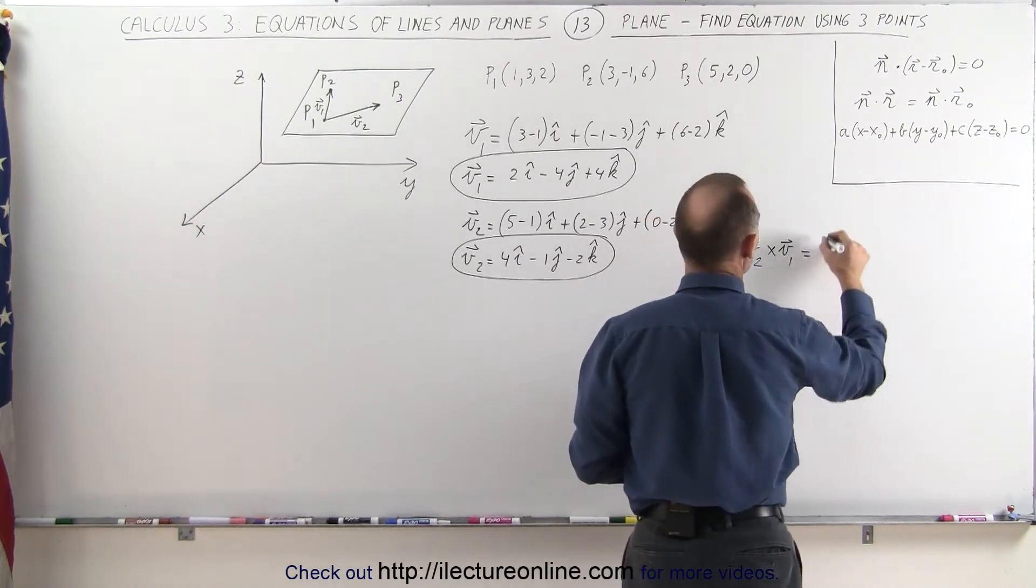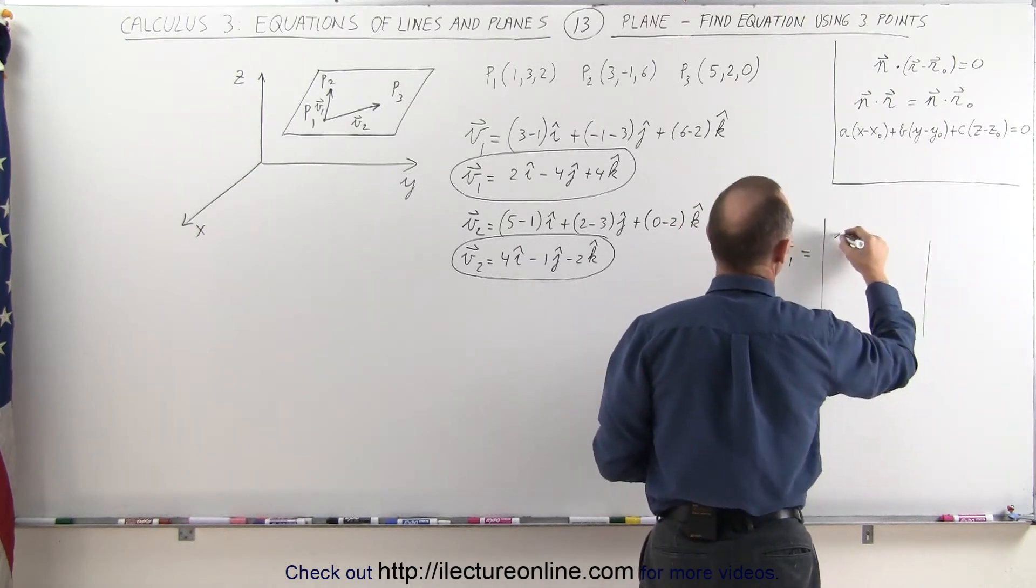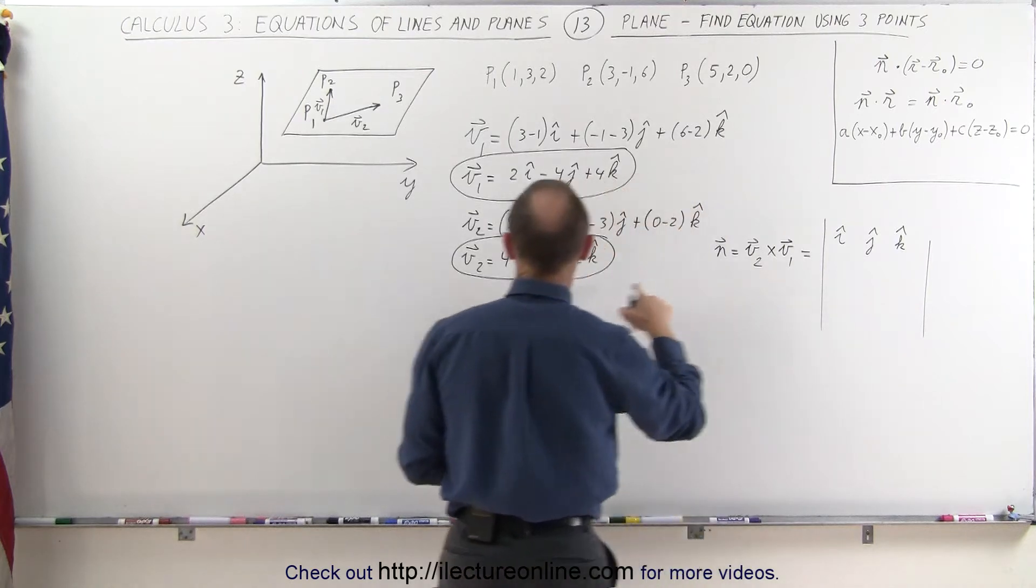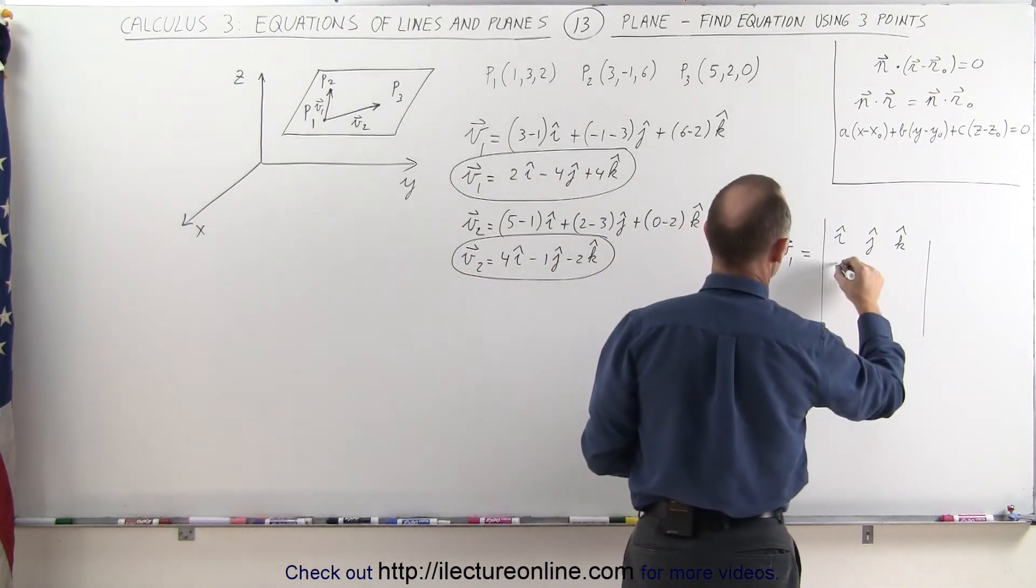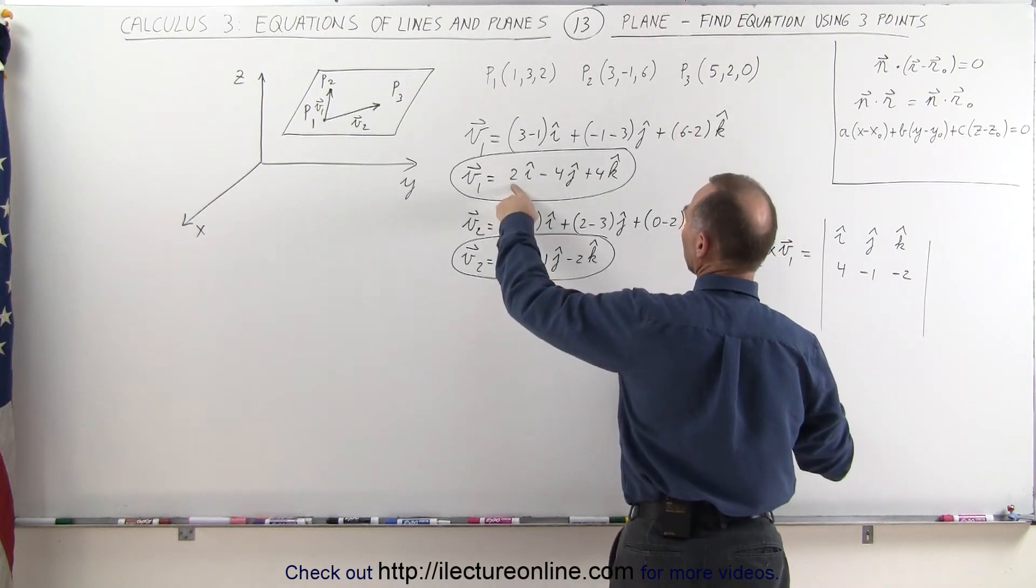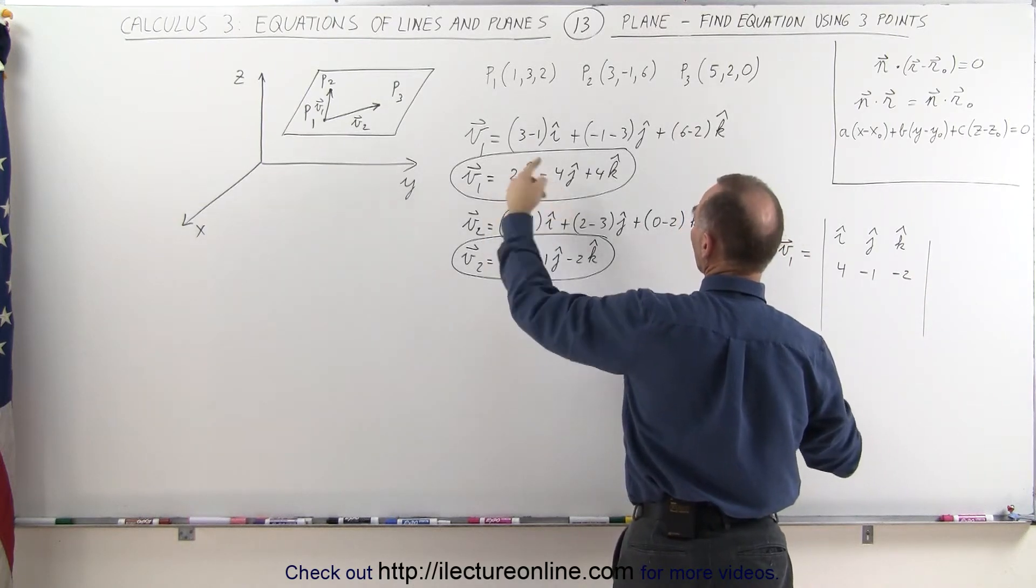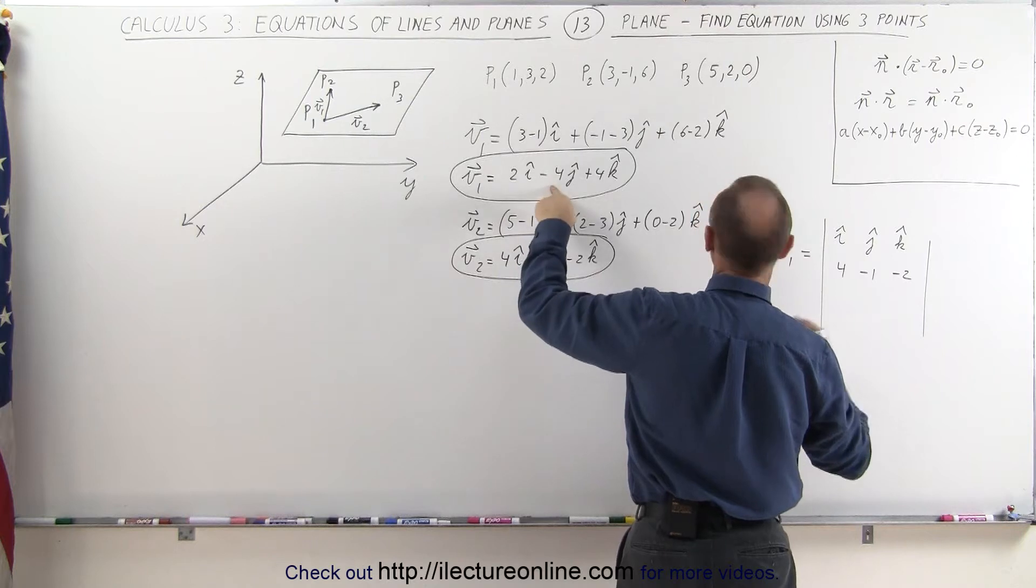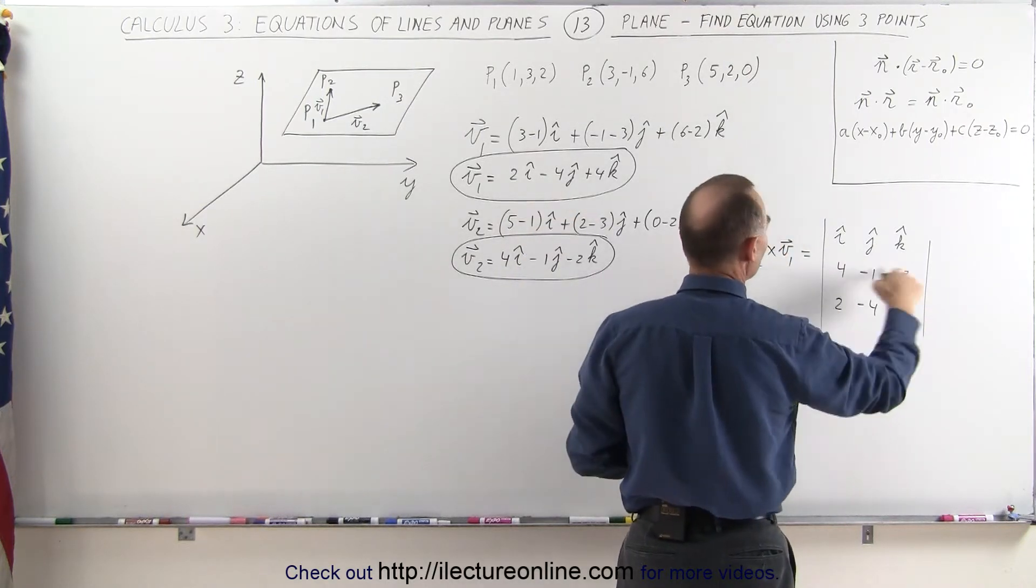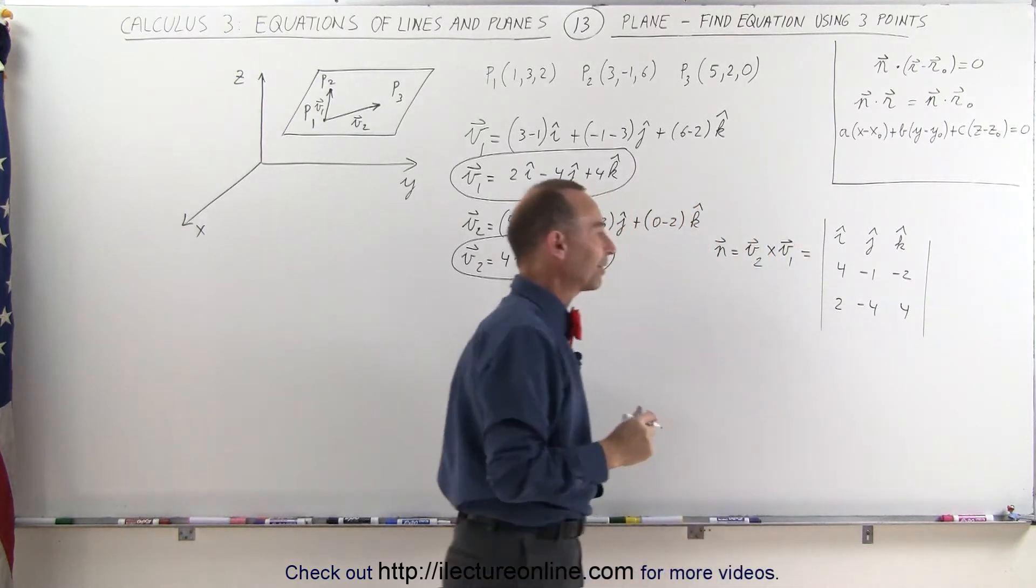And this will then be equal to - we have i, j, and k. I put down the coordinates of v2, which is 4, negative 1, negative 2. And the coefficients here, 2, negative 4, I should say the components, 2, negative 4, and 4. So I put the v2 vector first, and then the v1 vector after that.